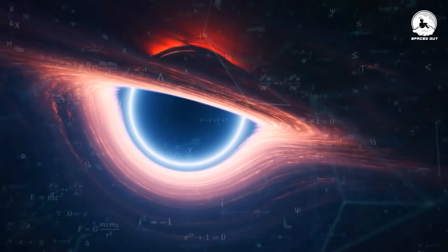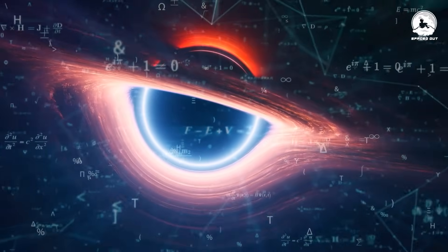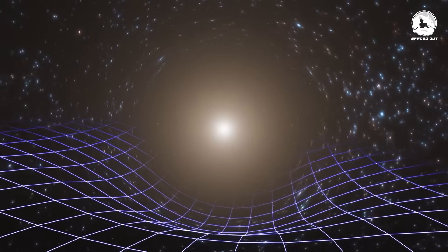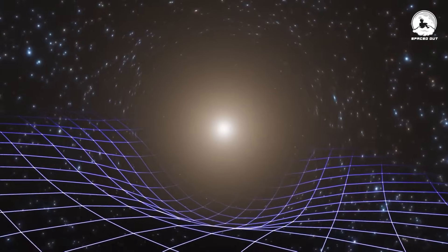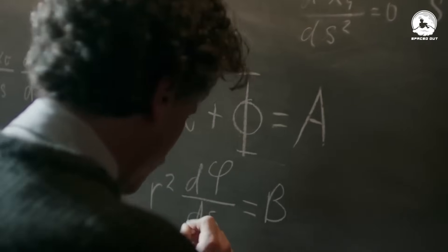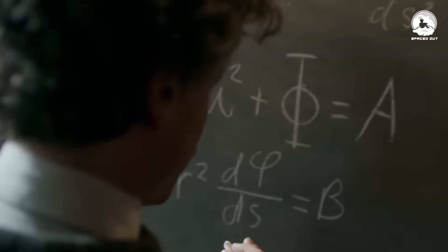While black holes existed as mathematical entities on paper for an extended period, Albert Einstein remained skeptical about their actual existence throughout his lifetime. Essentially, Einstein had reservations about trusting his calculations.